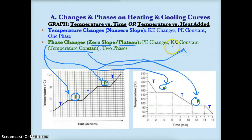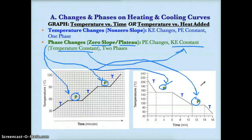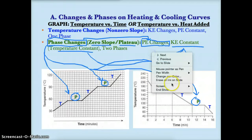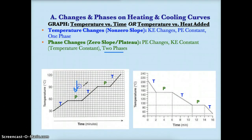Since it's a flat line, the temperature on the y-axis is not changing, so the kinetic energy is constant. However, since it's a phase change, the potential energy is changing. Phase change relates to whether potential energy increases or decreases. Since you have a phase change in these four green P regions, the potential energy is changing because potential energy only changes during phase changes. And since it's a phase change, you obviously have two phases present.